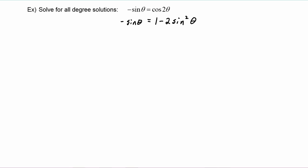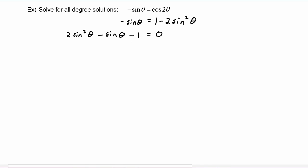We gather up all the terms on one side. Because the sine squared over here is negative, I would want to move that over to the left-hand side to make it positive, so it will become positive two sine squared theta. We still have minus sine theta, and the one is positive on the right-hand side, so when it comes to the left-hand side we have to write minus one, equals zero.